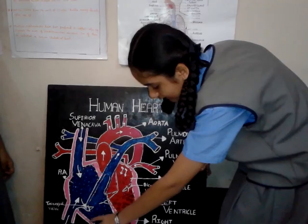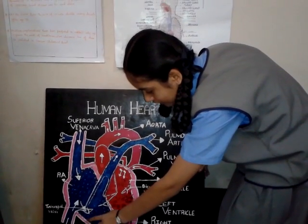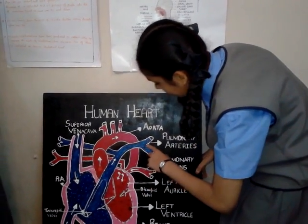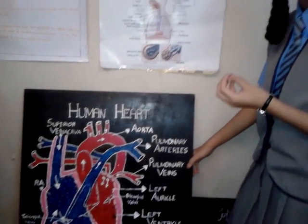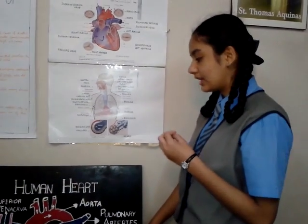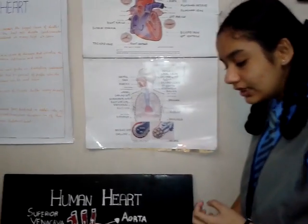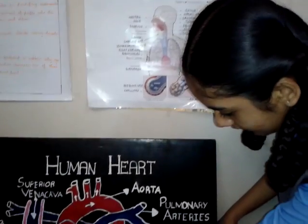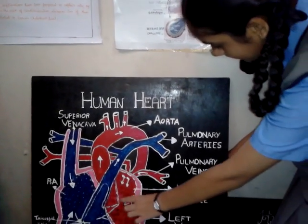Once it has entered the right ventricle, the right ventricle again contracts to push the blood to the lungs through the pulmonary arteries, where it releases its carbon dioxide and absorbs oxygen from the alveoli located at the end of the bronchioles. The newly oxygenated blood then enters the left auricle through the pulmonary veins.